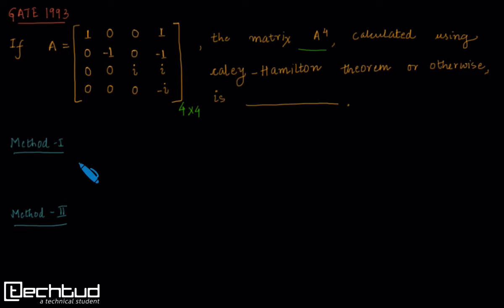Before proceeding to discuss this solution using Cayley-Hamilton theorem, let's first look at the naive way to solve this question. One might say that to find A^4, we can first multiply A by itself 4 times and we get A^4.